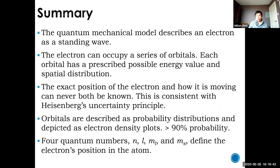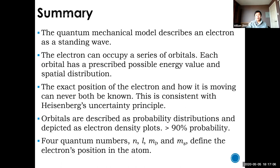In summary, we learned the quantum model of the atom: how electrons are actually standing waves and you can't find them in specific locations, only describe the probability of finding them in certain areas — that's an orbital. We covered the Heisenberg uncertainty principle, the four quantum numbers (N, L, ML, and MS), how to draw energy level diagrams, and how to locate electrons using quantum numbers. This was a long and new class covering difficult material.